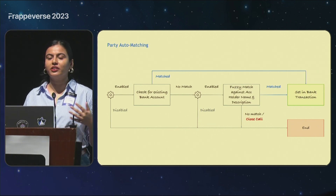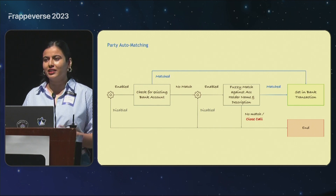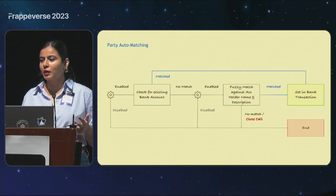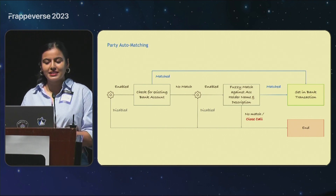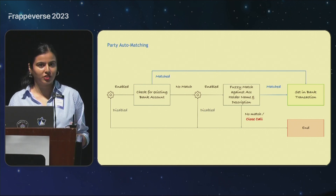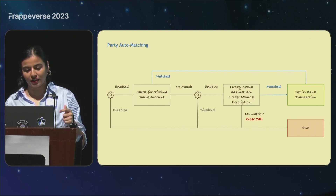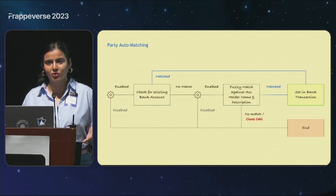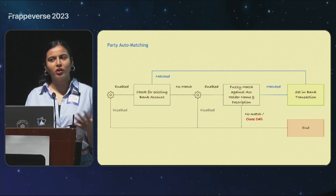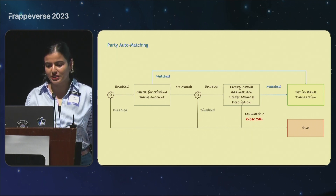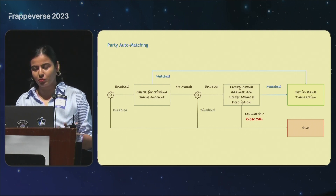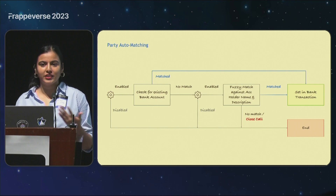Where this matching will take place is when your bank transaction gets submitted in your system. There are different ways for this — you could use an integration which automatically gets transactions into your system, in which case it will be automatically submitted, or even if you upload a bank statement, the same applies. Essentially, there's no user intervention required; it will automatically match and set the party in your bank transaction. The first check is a pretty simple bank account check — if you already have a mapping in the system, we use that. If not, we move on to fuzzy matching if it's enabled.